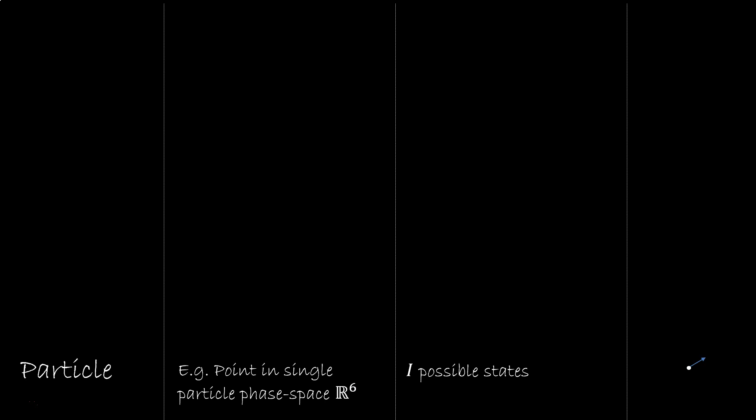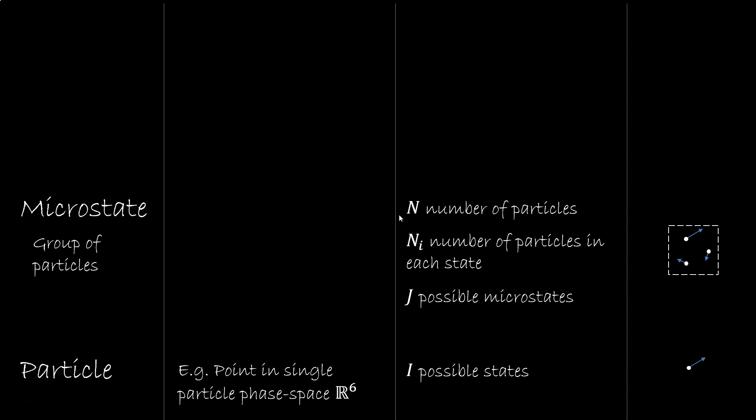At a level above, we have a microstate, which is the state of a group of particles. N is the total number of particles, and Ni is the number of particles in a particular state i. J is the set of all possible microstates. For example, in classical mechanics, a microstate is represented by the position and momentum of all the particles, R to the 6N. This is also sometimes called gamma space. There is an issue here that the permutation of particles should be the same microstate, but they are different points in R6N, so one has to be careful.